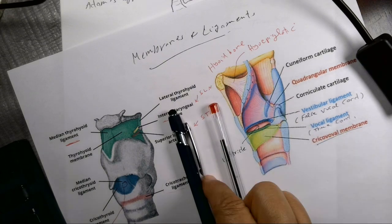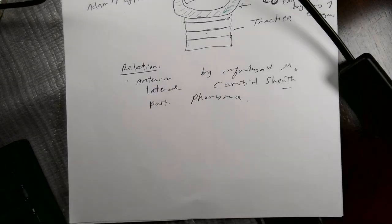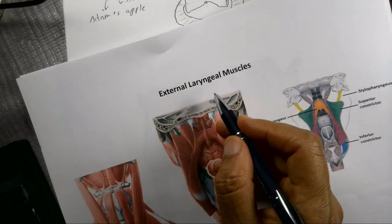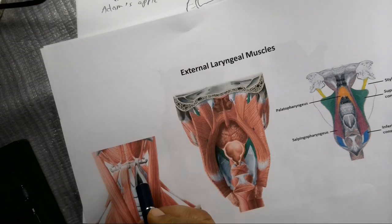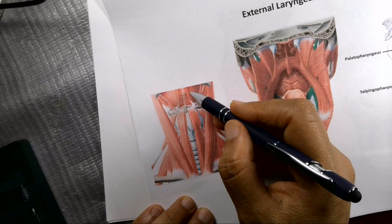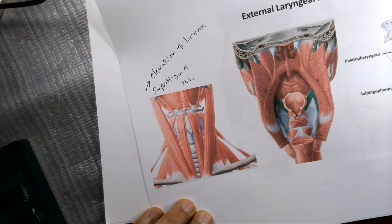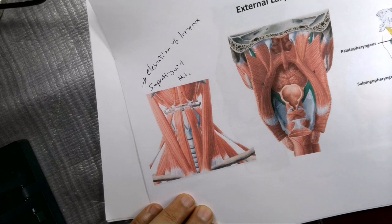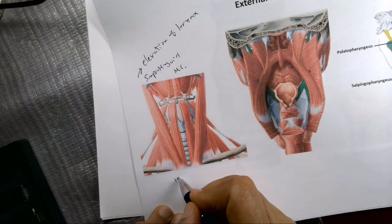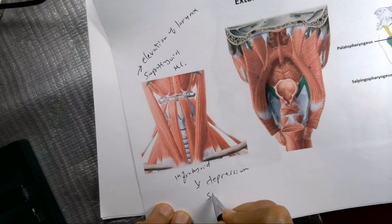Now for the muscles of the larynx. The external muscles move the larynx. Suprahyoid muscles — above the hyoid bone, such as digastric, mylohyoid, and geniohyoid — have the function of elevation of the larynx during swallowing. On the other side, infrahyoid muscles — such as sternohyoid, sternothyroid, thyrohyoid, and omohyoid — have the function of depression of the larynx during swallowing.